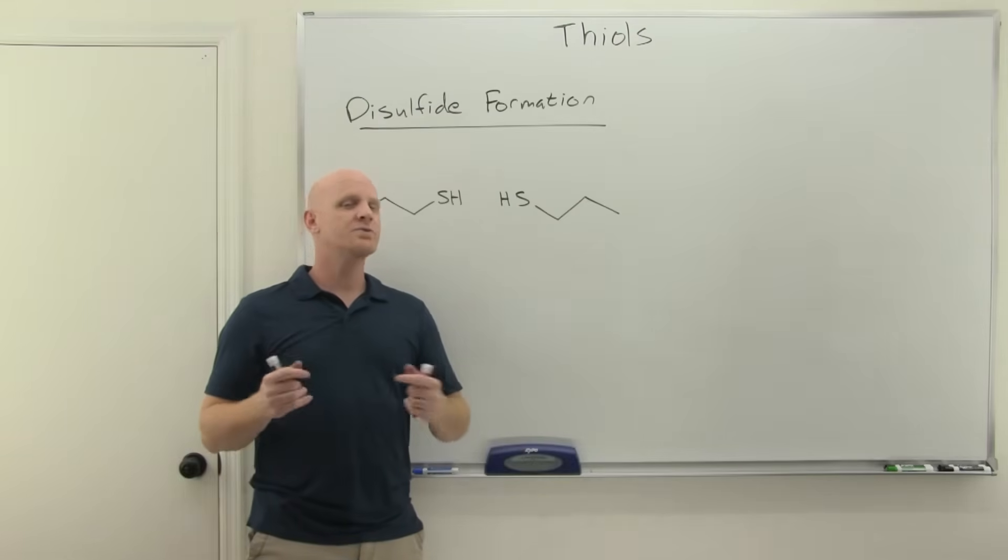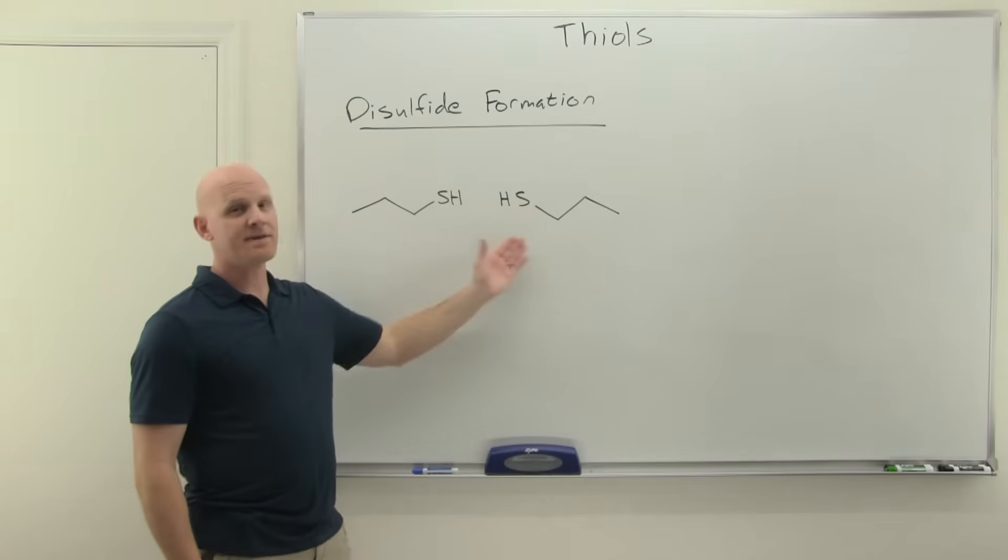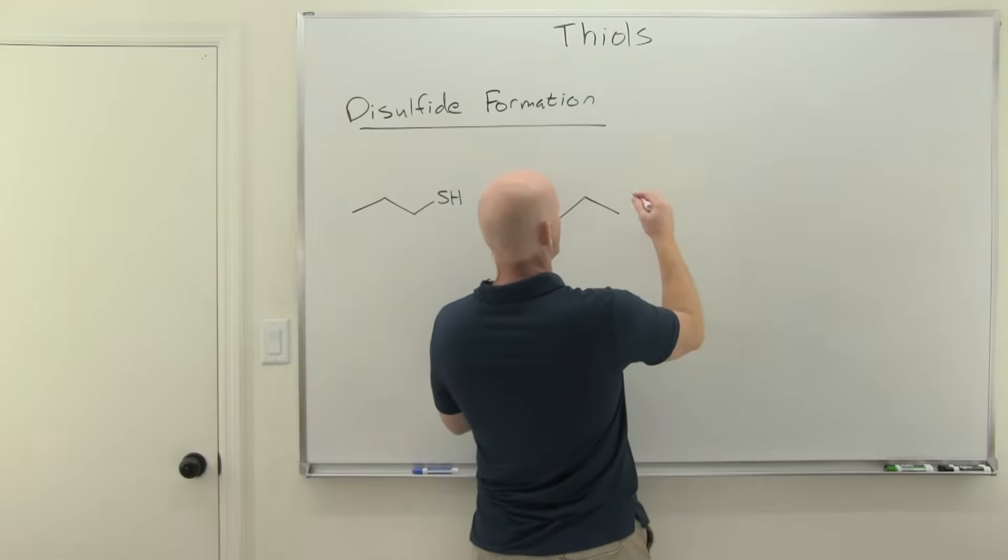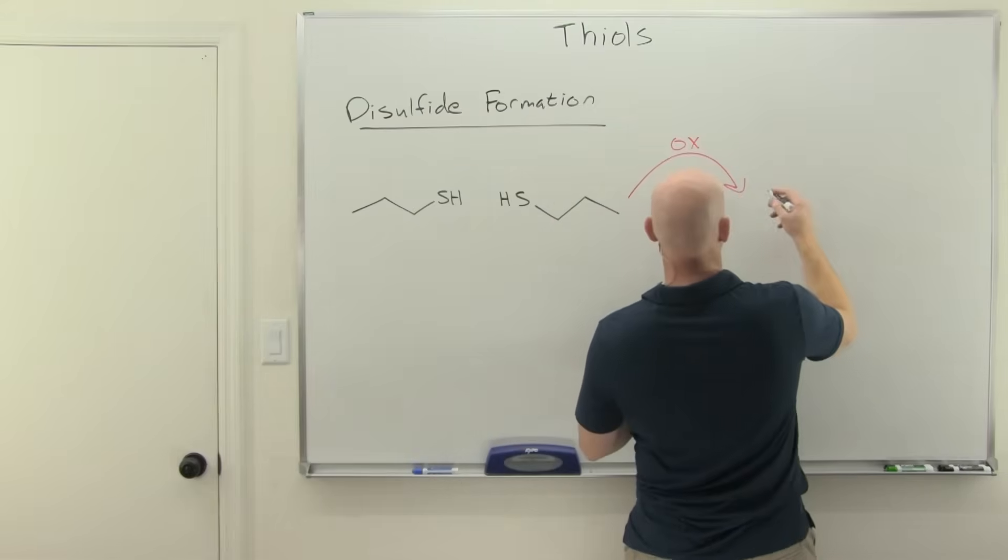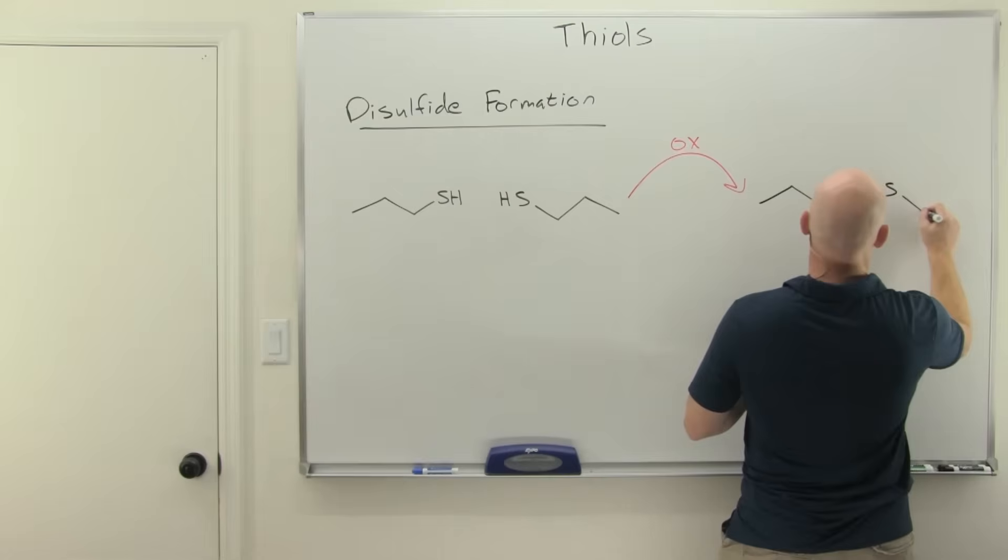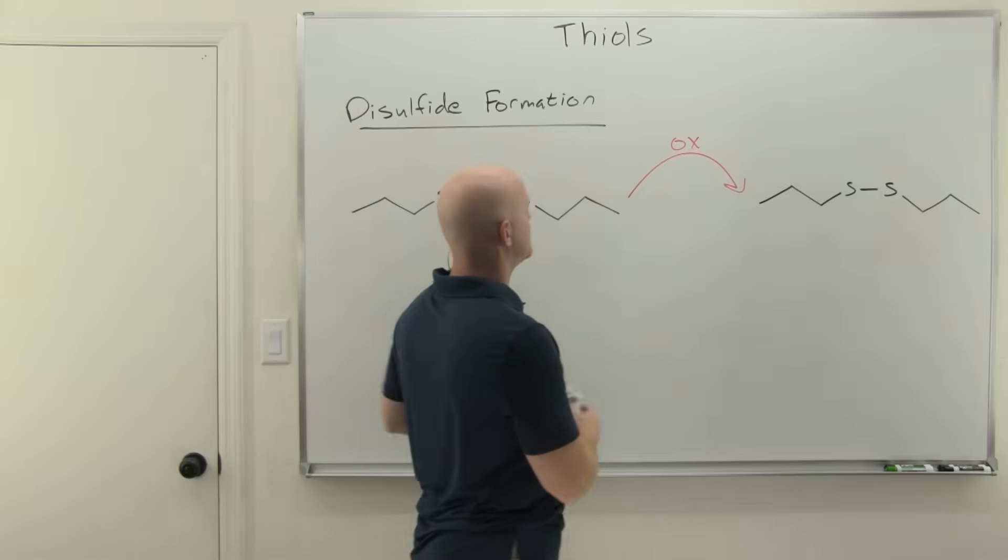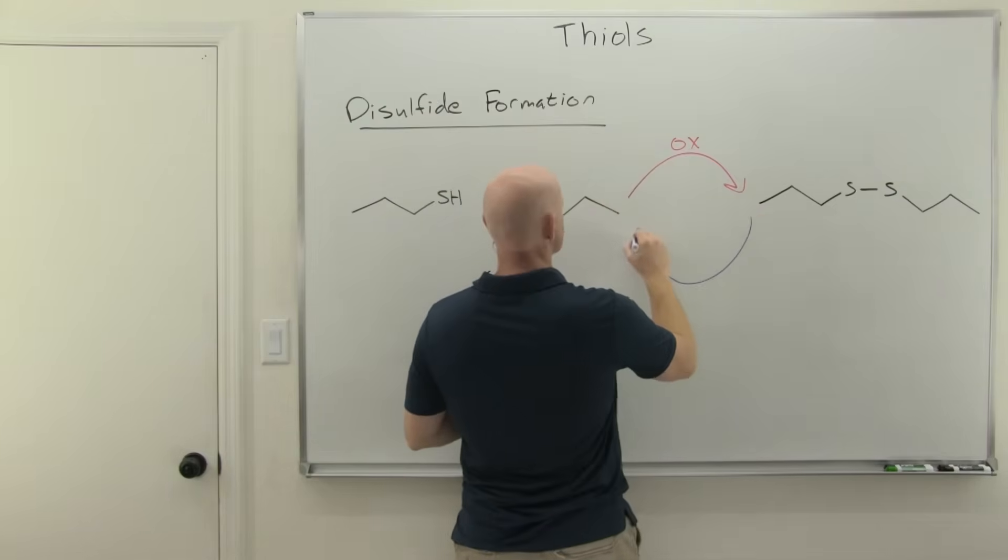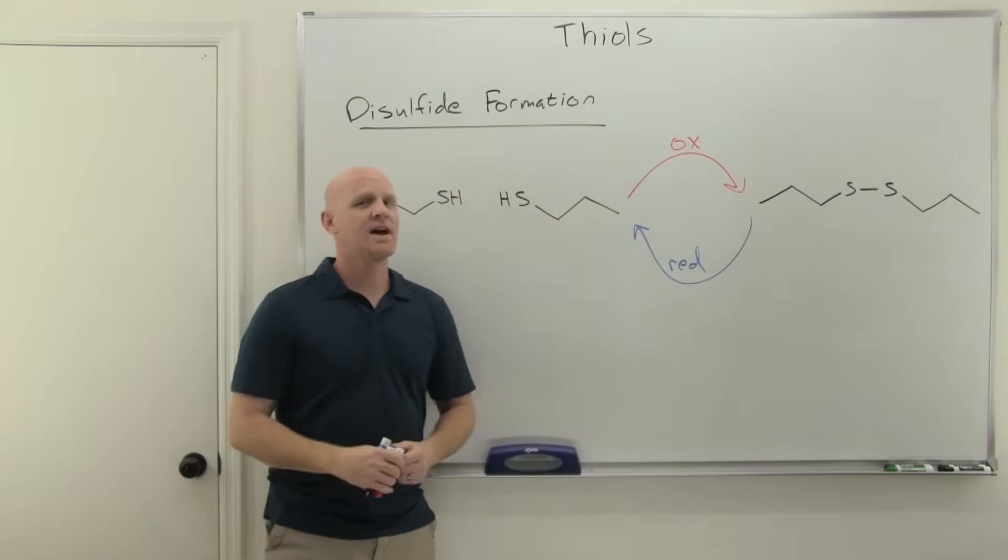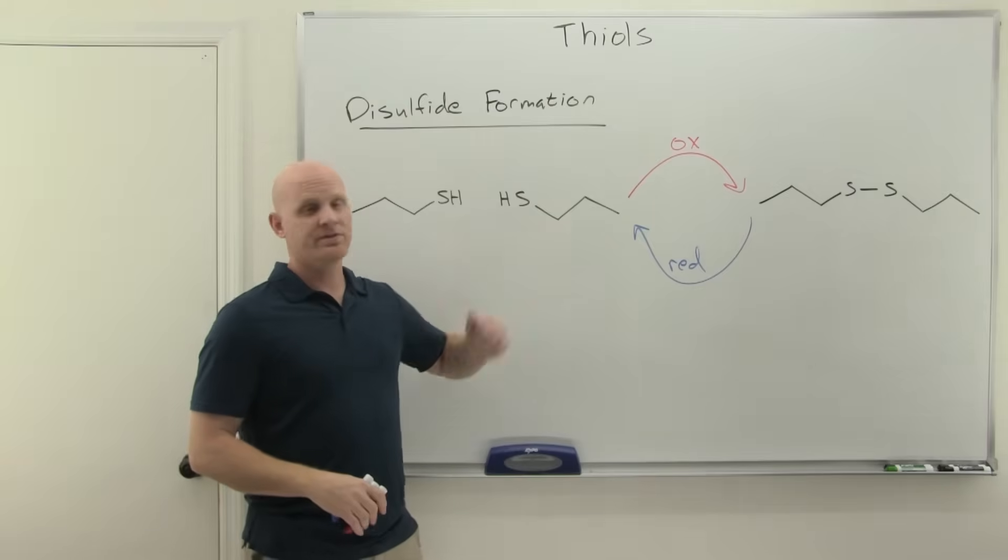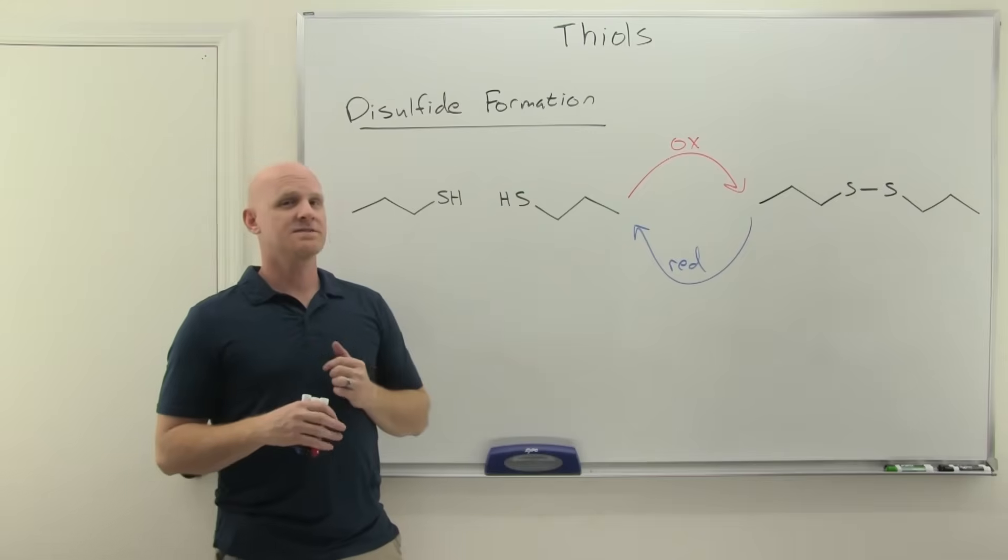The one major reaction for thiols is forming what we call a disulfide. Here I'm going to use two equivalents of a single thiol, and it turns out we're going to oxidize these, and they're going to dimerize when you oxidize them. We're going to form a disulfide, and it turns out this is completely reversible—you can add a reducing agent to undo this. This reaction actually has a little bit of biological relevance. Your cysteine residues, which is one of your naturally occurring amino acids, undergoes this exact process. Let's take a look.